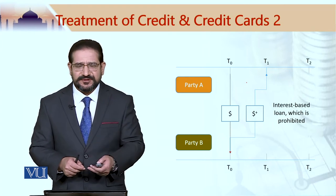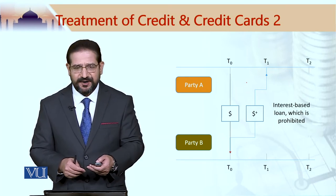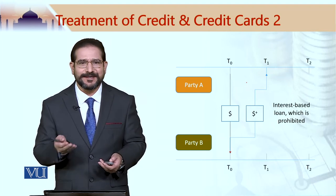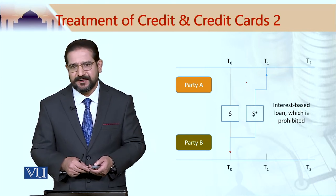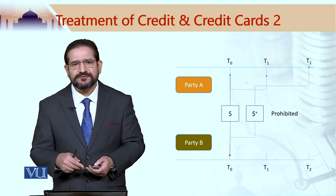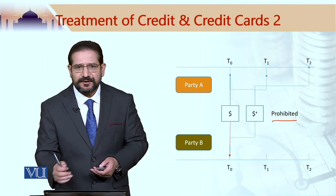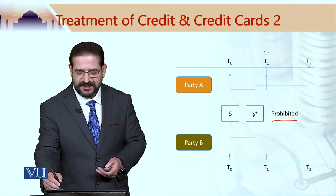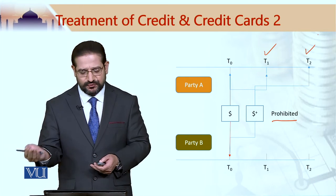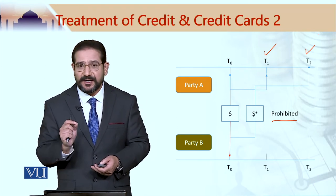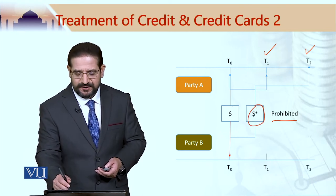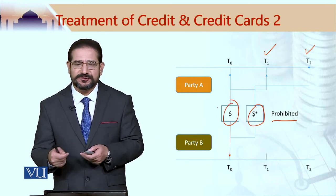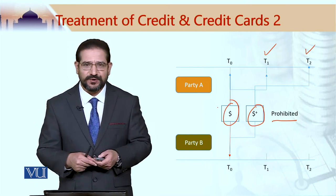If some amount of dollars is given by party A to party B now in exchange for a higher amount of dollars, this is an interest-based loan and is not accepted in an Islamic legal framework. This remains prohibited even if the payment of the loan is in installments — some money paid at T1, some at T2 and so on — as long as dollar-star or dollar-plus is greater than the original dollar amount, i.e., as long as unequal amounts of dollars are exchanged between the two parties.